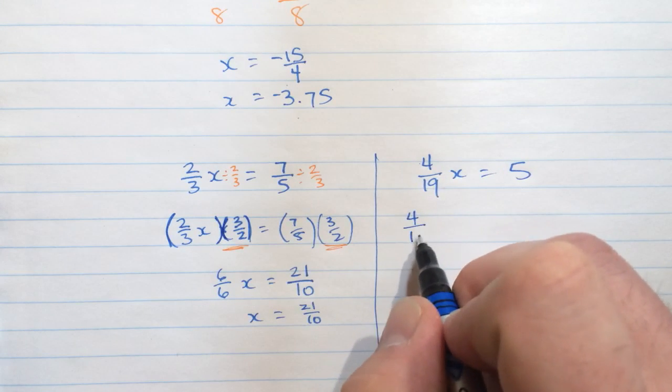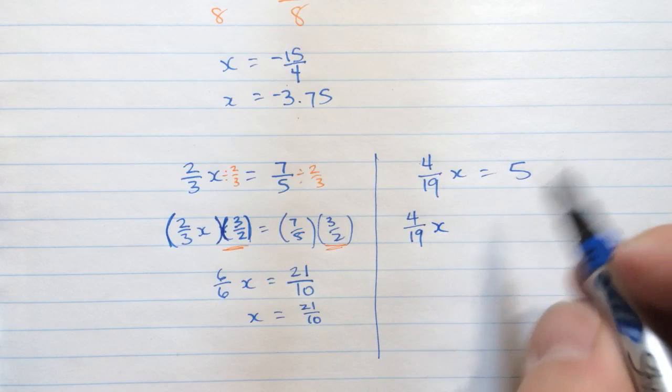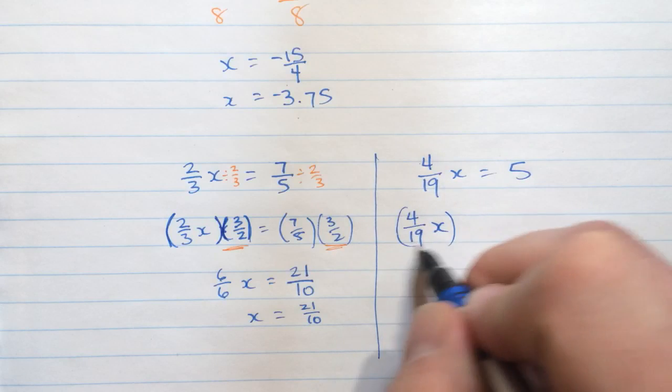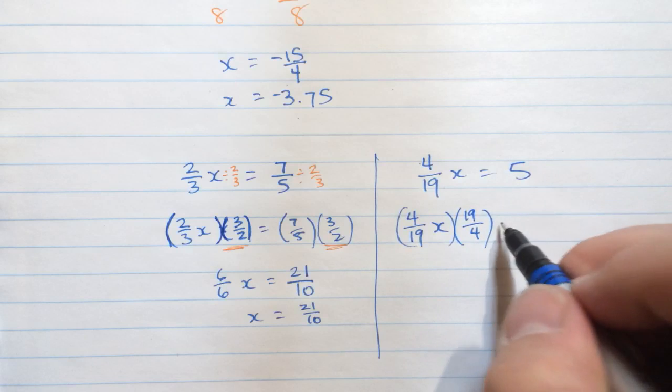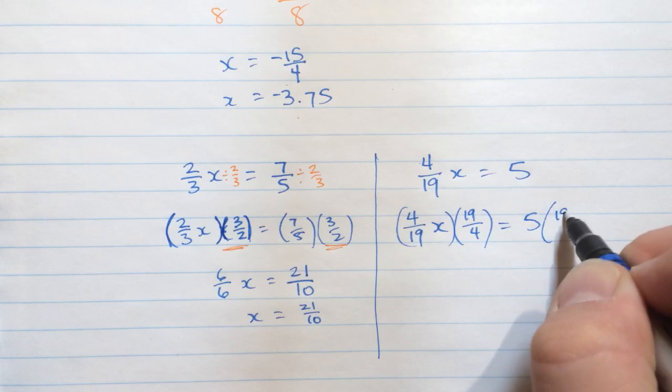then you can, instead of dividing, which is one way to think of the inverse operation, you can multiply by the reciprocal. So I'll multiply by 19 over 4 on both sides of my equation.